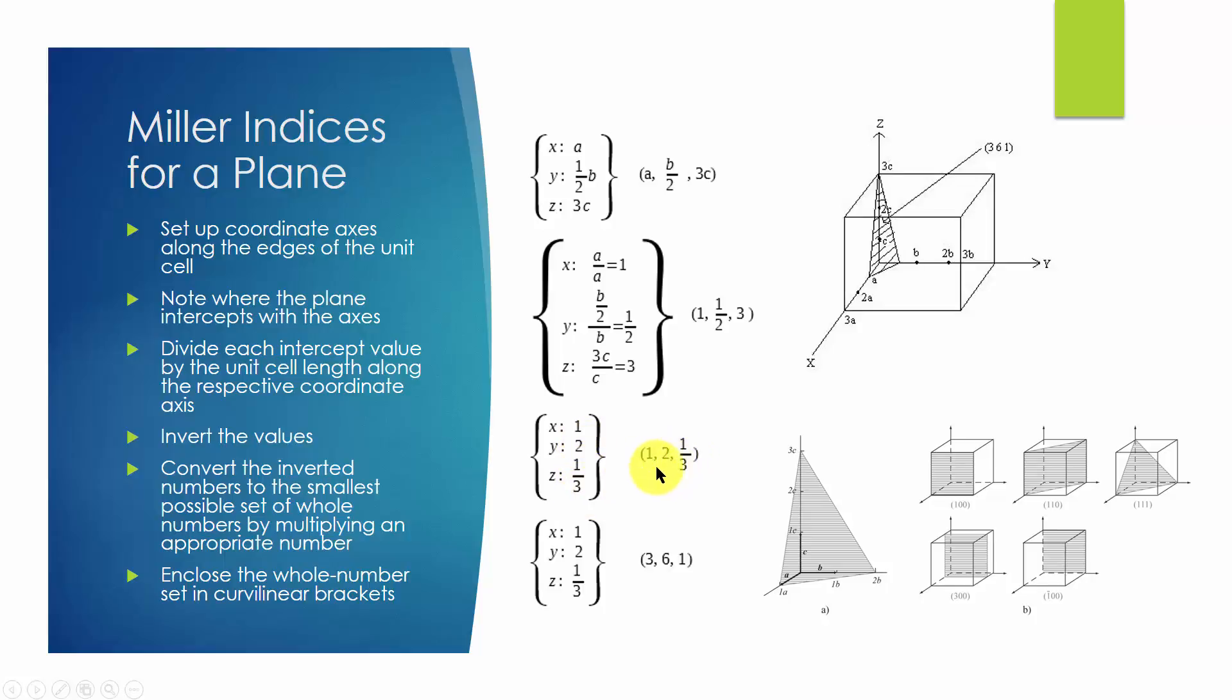Then we multiply these numbers by a minimum possible integer so these numbers become the smallest possible whole numbers. For this particular case, we need to multiply with the number 3, and we get 3, 6, 1 as the final numbers.